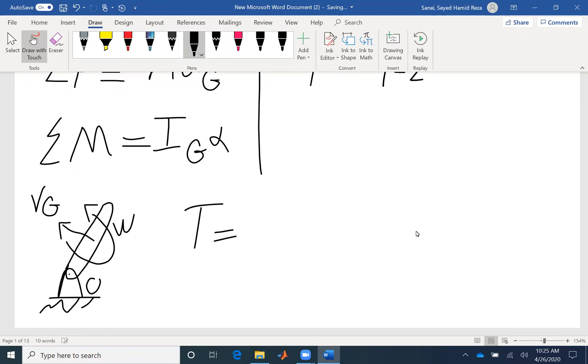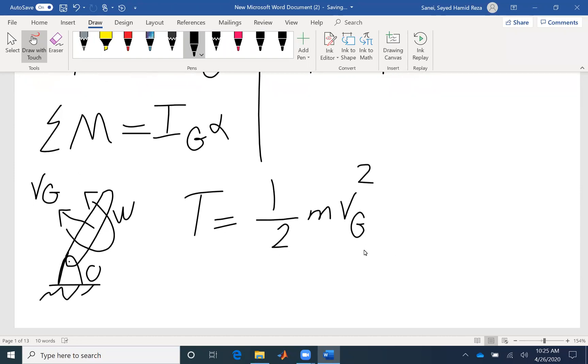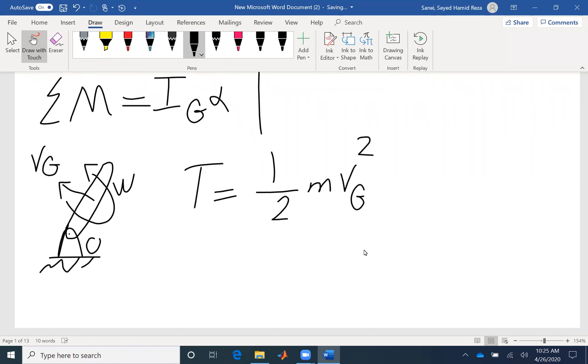So the kinetic energy has two components. First, the translational component, which is the same as kinetic energy of a particle, mass velocity squared. So that's the translational component of kinetic energy.